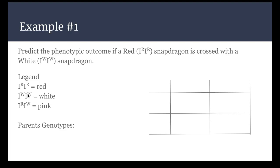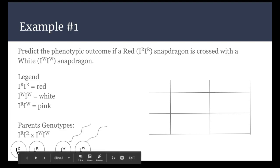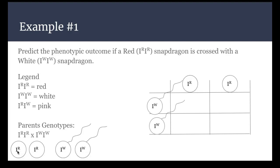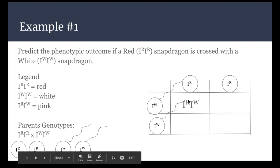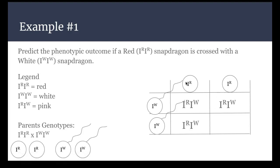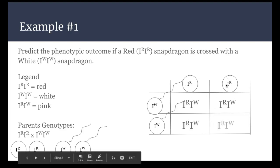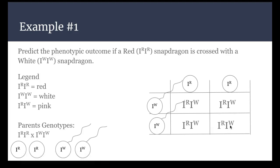So the parents in this crossing are red and white, so the gametes would look like this - each gamete gets one I with an R or a W connected to it. When I put my gametes into my Punnett square, it would look like this, and when I cross them I get one R over here and one W, one R and one W, one R and one W, and one R and one W. So that means that all of my offspring from this crossing are all pink.